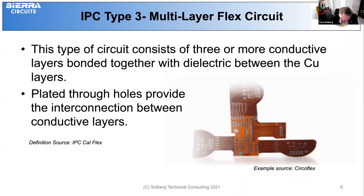In Type 3, the circuit consists of three or more conductive layers stacked and bonded together with thin dielectric adhesive film layers. The plated through vias are formed following lamination to provide the interconnect between the layers.